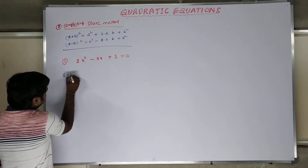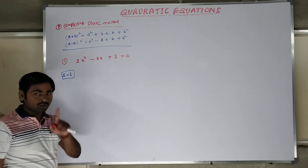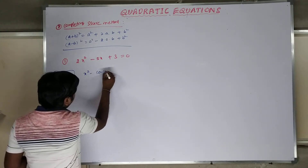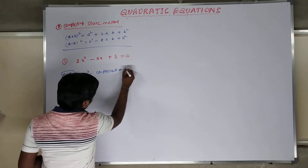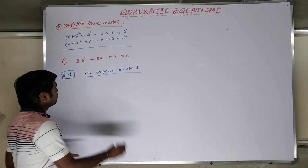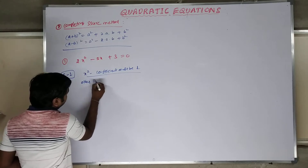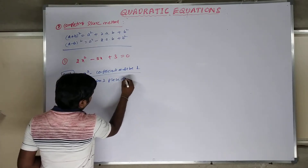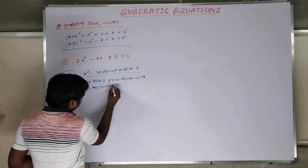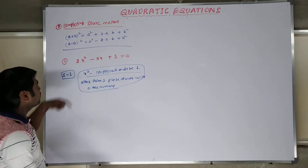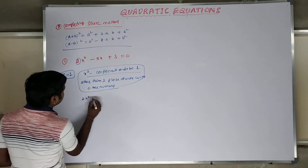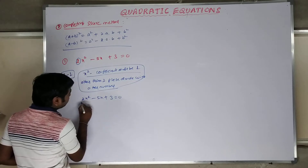Step number one: the x squared coefficient must be 1. If it is other than 1, please divide the entire equation by that number. Here the x squared coefficient is 2, so we divide the total equation by 2. So: 2x squared minus 5x plus 3 equals 0 — divide everything by 2.